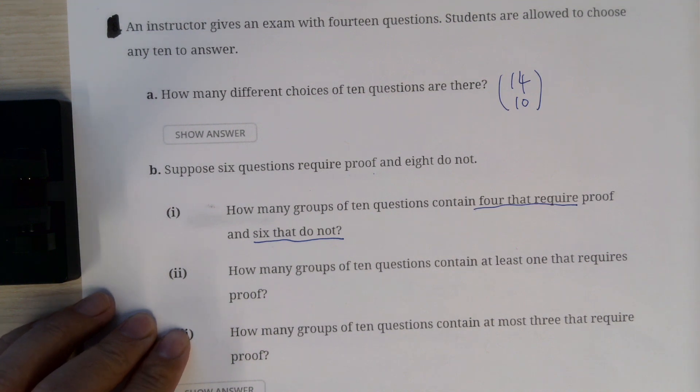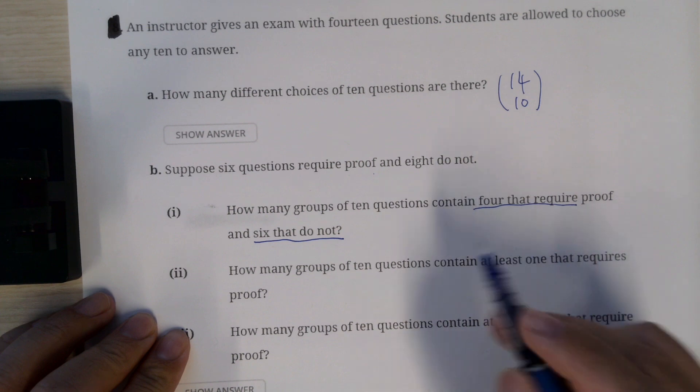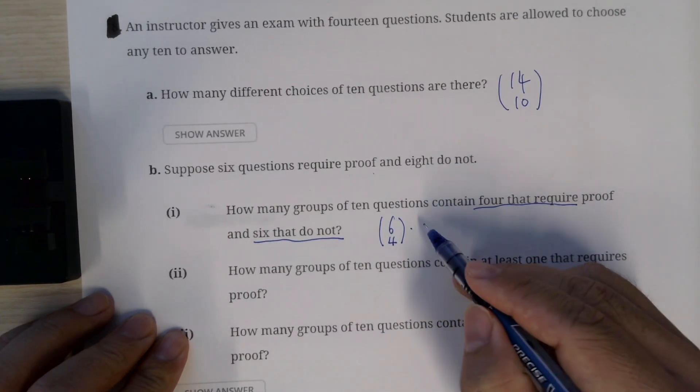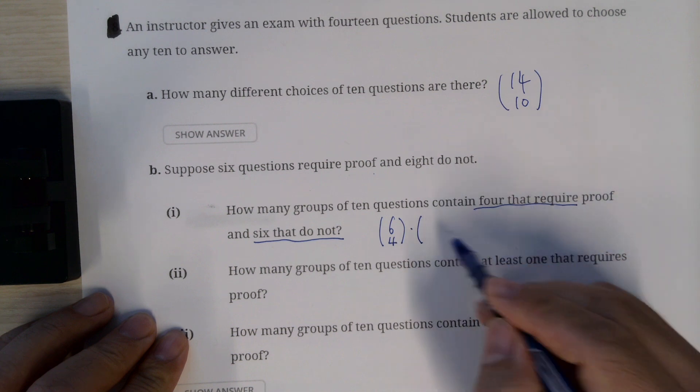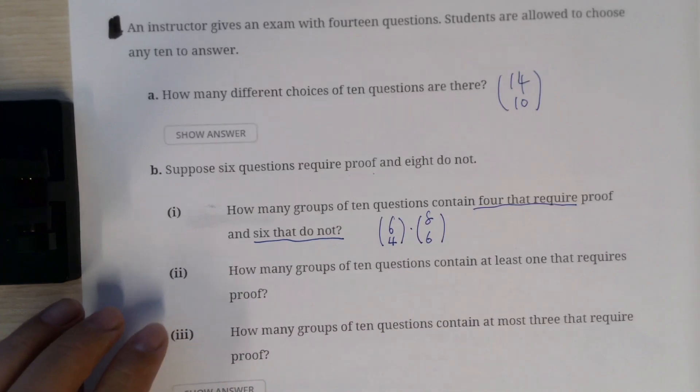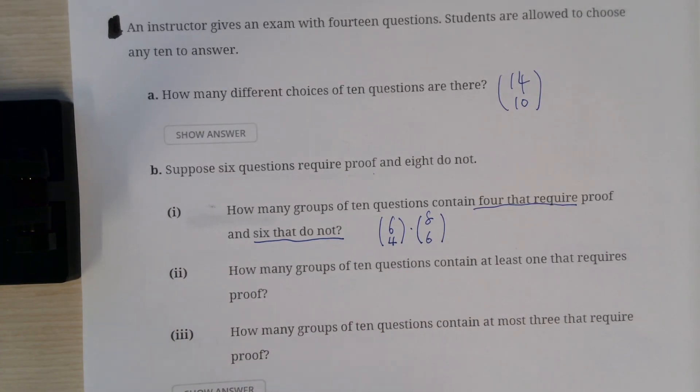Well, we can select the 4 out of 6, right? So 6 choose 4 and then times 8 choose 6. So that will give you the answer.